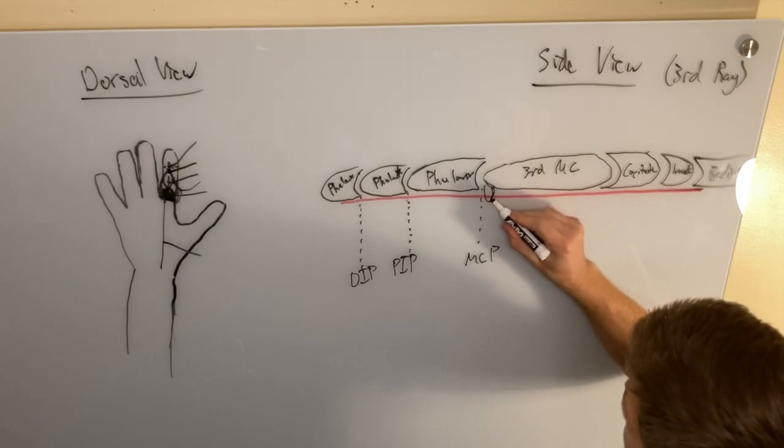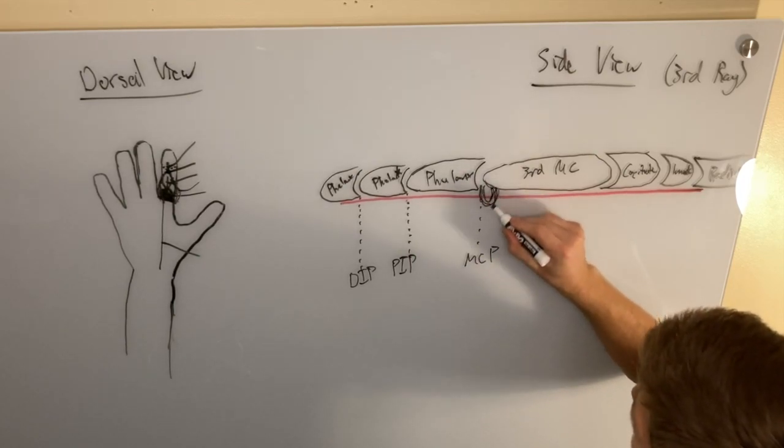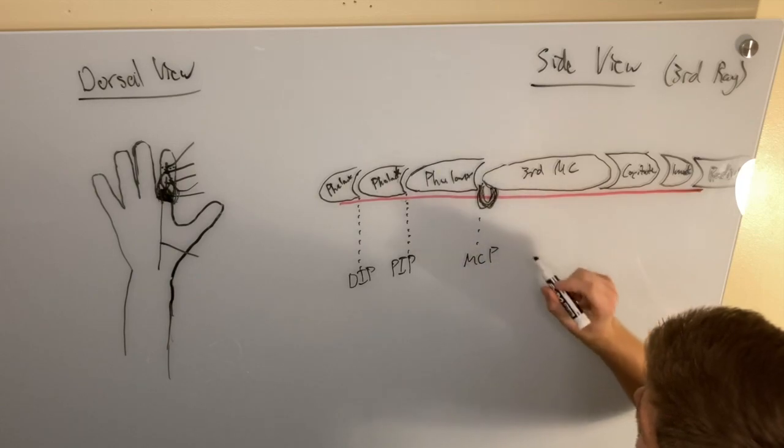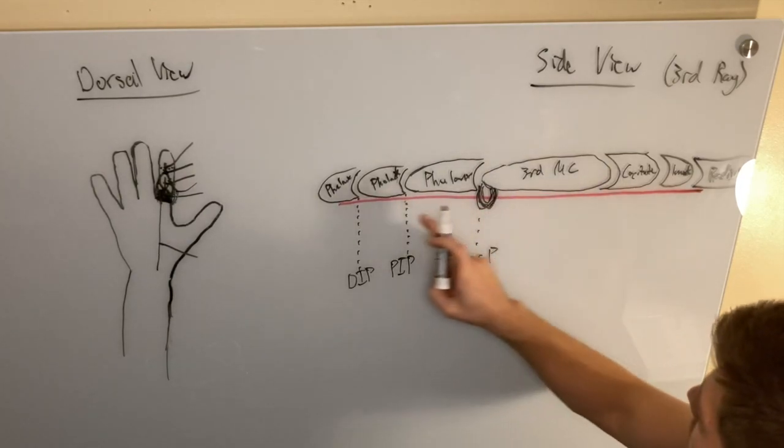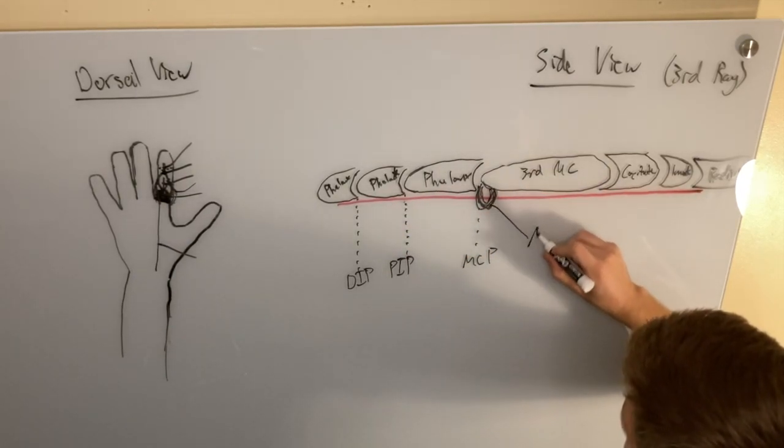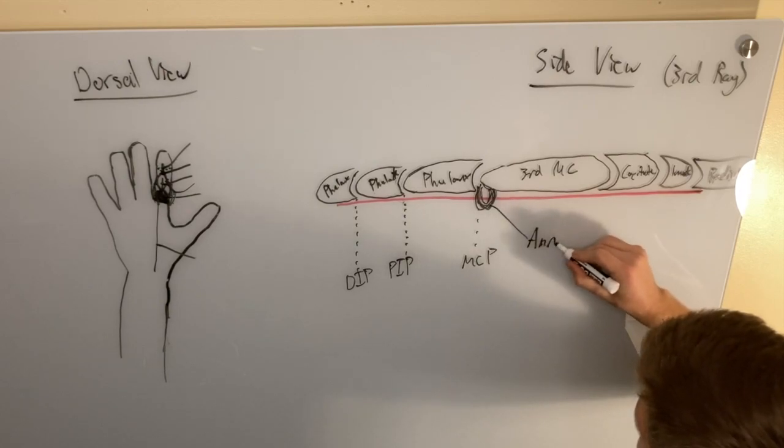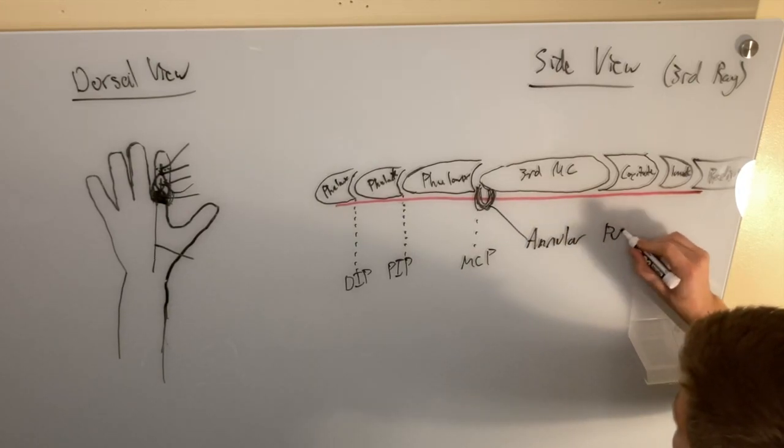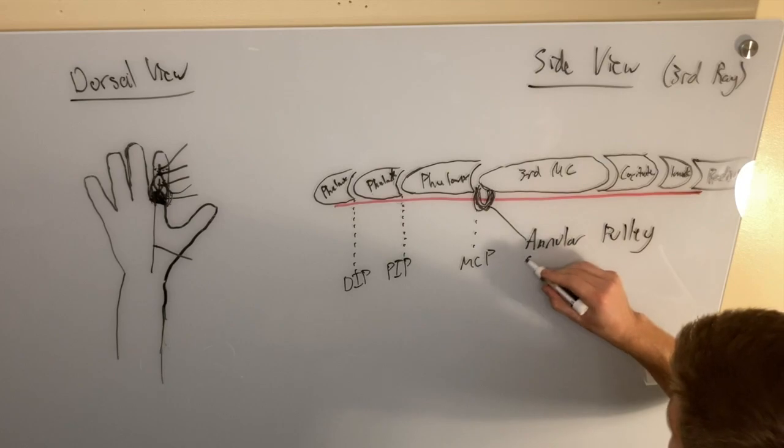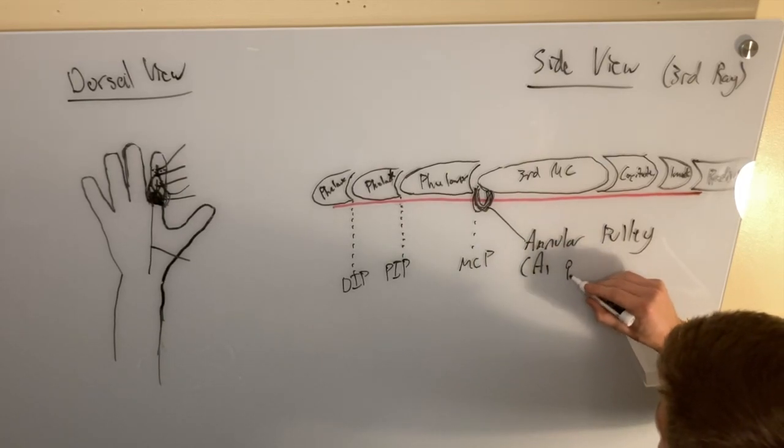which is an annular pulley, which is where this tendon goes through. This is called the annular pulley or the A1 pulley.